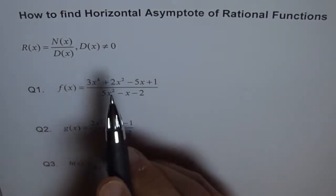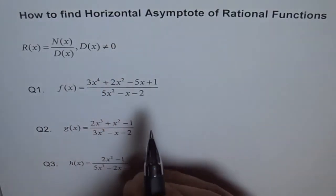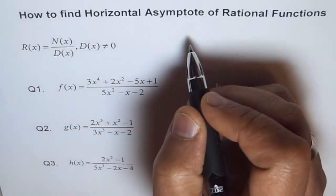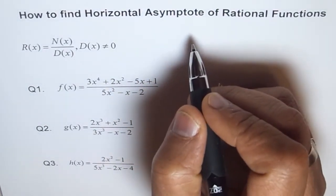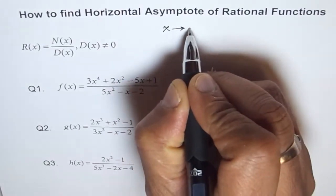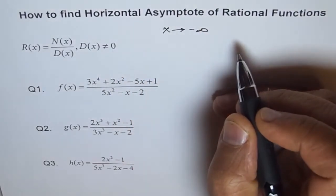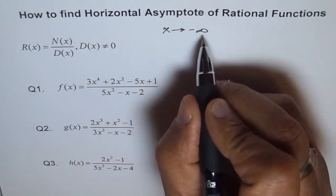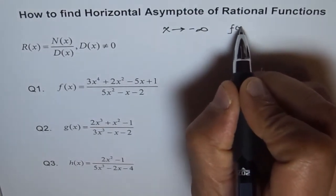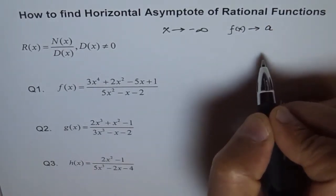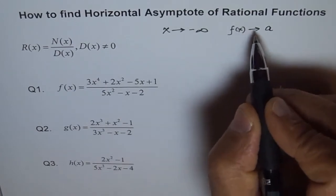Now let's understand what a horizontal asymptote is. We are trying to figure out what happens when x approaches a very large negative or positive value. If x approaches negative infinity and f(x), or the y value, approaches some fixed value — let us say 'a' — then we say that a horizontal asymptote exists.